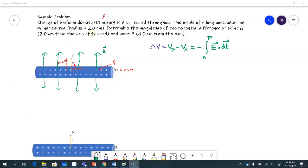Here is a problem that gives us a long cylinder, a non-conducting cylinder with a charge density of 90 nanocoulombs per cubic meter. That's the rho that's given. And the rod's radius is given 2 centimeters.